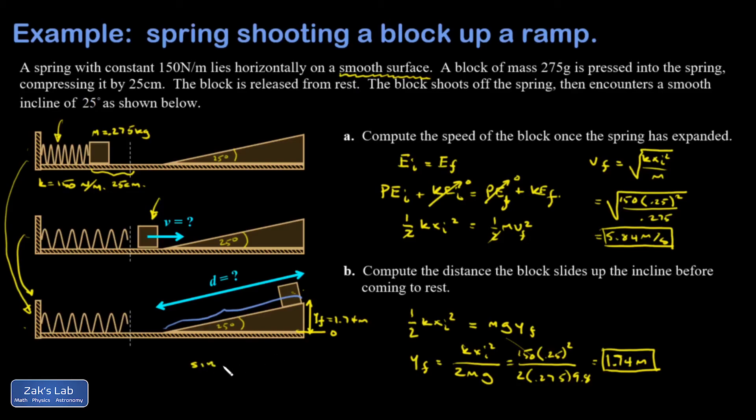And I see that the sine function is the one that is best adapted here. So the sine of 25 degrees is 1.74 meters over d. So d is going to be 1.74 over sine 25. And I get a sliding distance of 4.12 meters.